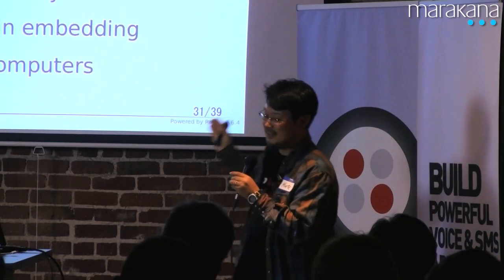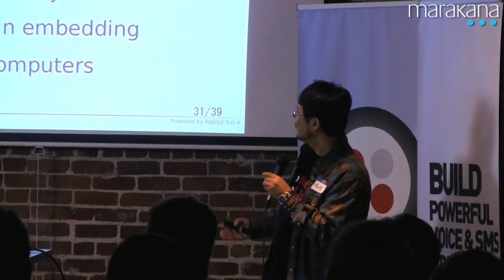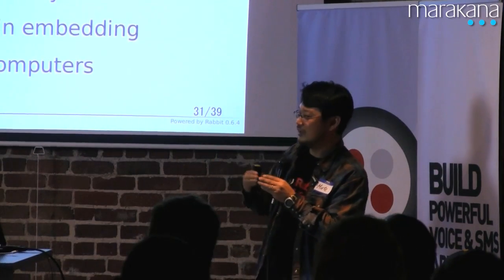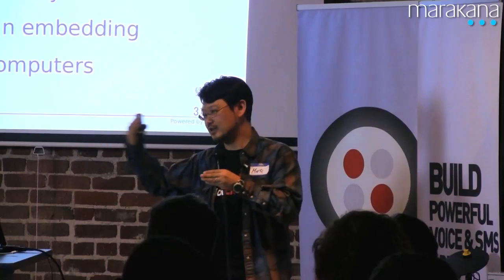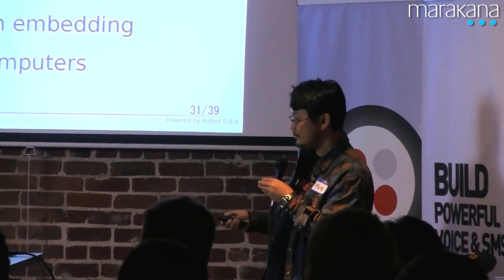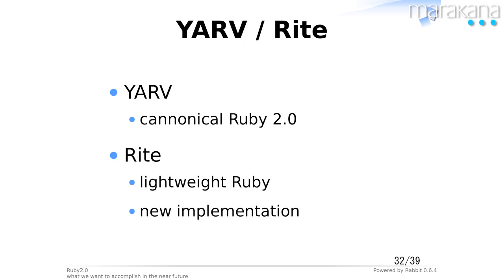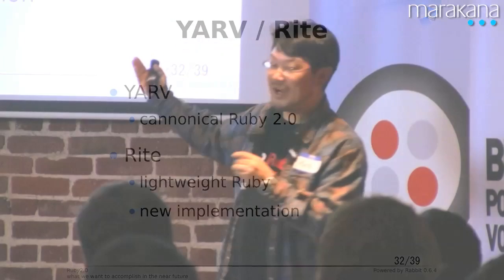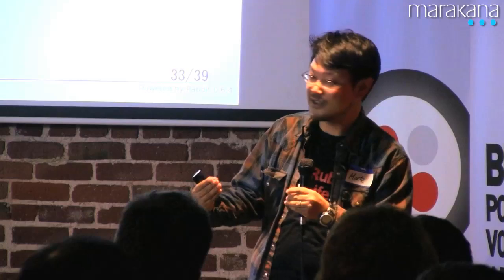For Ruby 2.0, we will continue work on YARV — the canonical Ruby 2.0. At the same time, we started the lightweight Ruby, which Professor Tanaka introduced to you, which we call mruby. It's a totally new implementation — a Ruby subset for smaller computers that is embeddable and configurable. For example, in an embedded system you can configure a smaller interpreter. We don't need I/O in a refrigerator — there's no filesystem — so you can totally remove I/O from the Ruby interpreter running on the refrigerator.